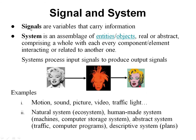Now what are signals? Signals are the variables that carry information and you have different types of signals such as motion, sound, picture, video, traffic, light. And what is a system? System is nothing but an assembly of entities or objects which will be connected together to produce a specific output signal.